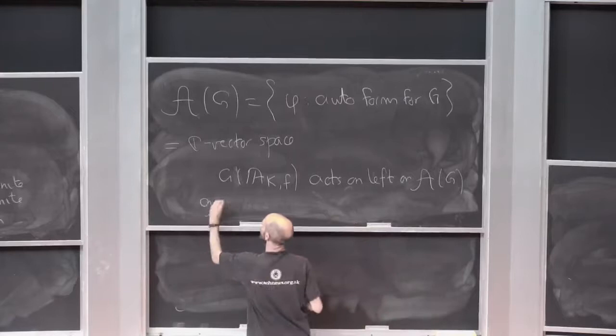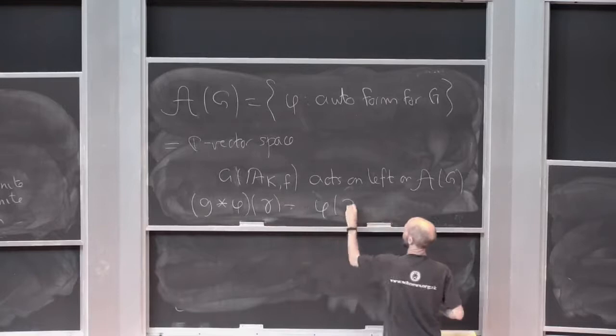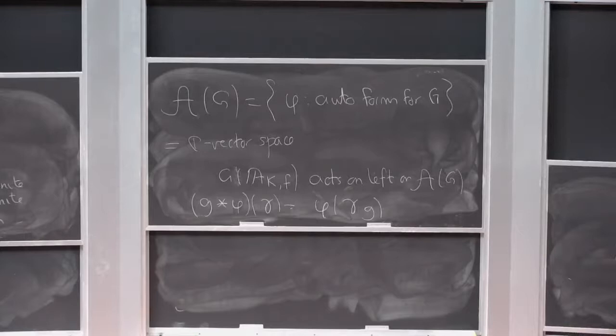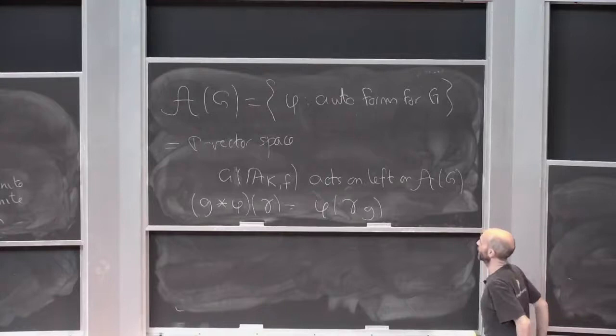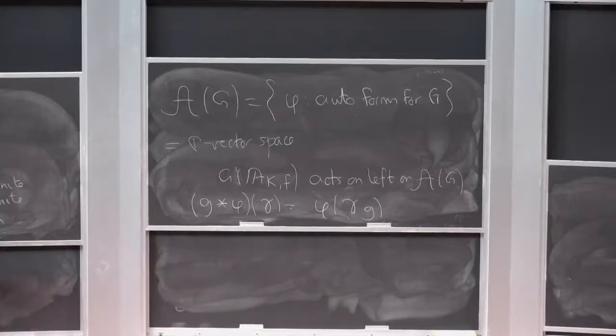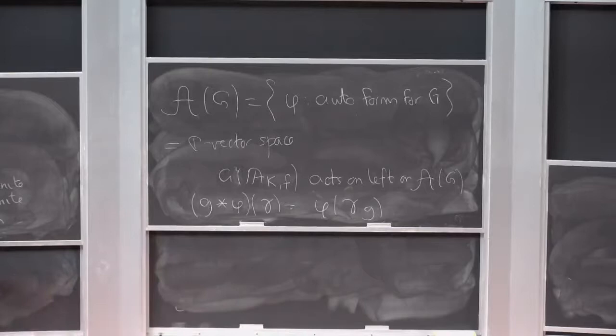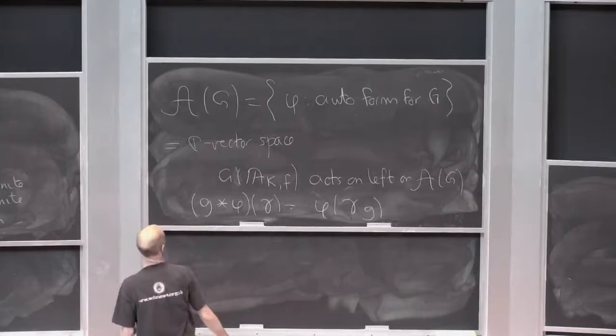G star phi of gamma is phi of gamma G. And if we wrote maps on the right, then this would be obviously seen to be an action. The reason I've only put the finite Adels is because of the smoothness conditions — if that was smooth, then this was smooth, that's fine. This is staying away from infinity, so this obviously won't affect Z-finiteness or H_infinity-finiteness.